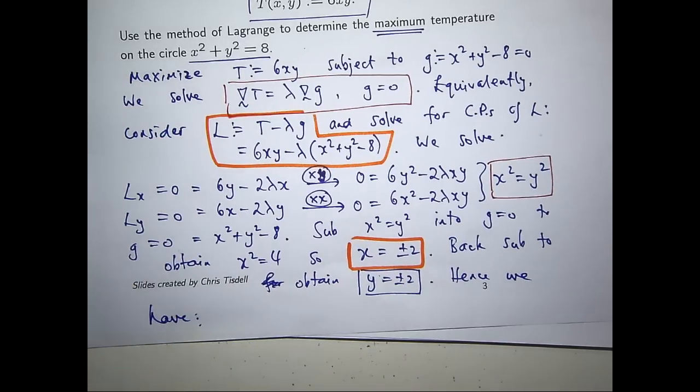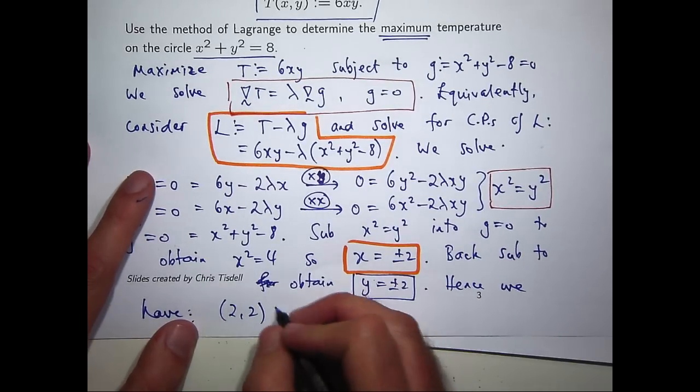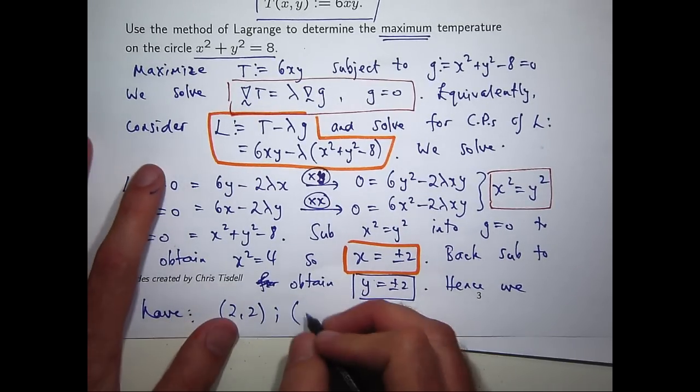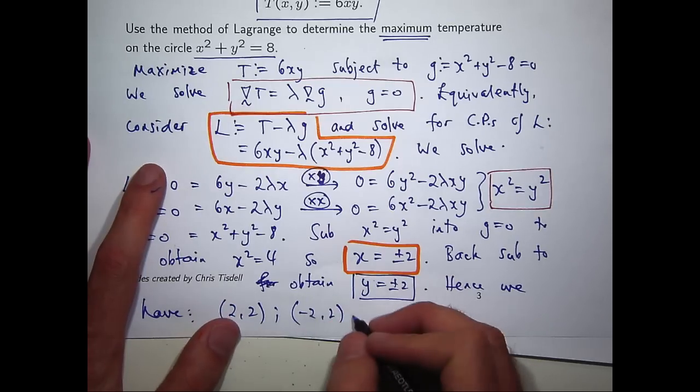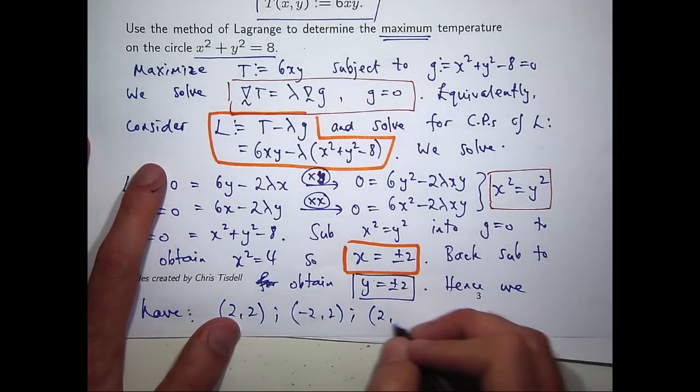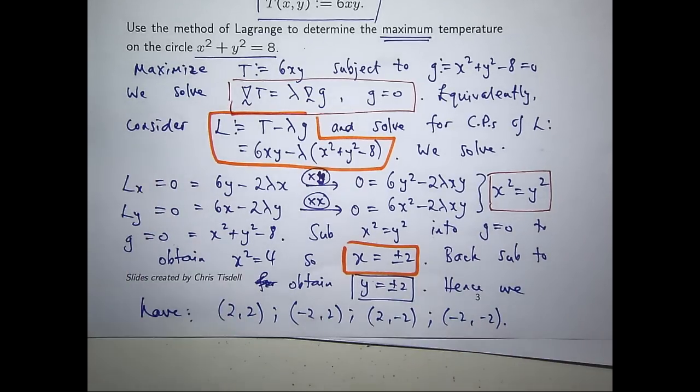Okay, so our points of interest are the following: (2,2) where the signs are the same, (-2,2) where the signs are slightly different, (2,-2), and (-2,-2). So now we're almost finished.